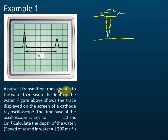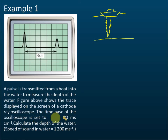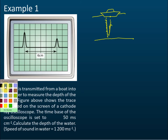The question states: a pulse is transmitted from a boat into the water to measure the depth of the water. The figure shows the trace displayed on the screen of a cathode ray oscilloscope. The time base of the oscilloscope is set to 50 milliseconds per cm. The time base is the setting for the horizontal scale.